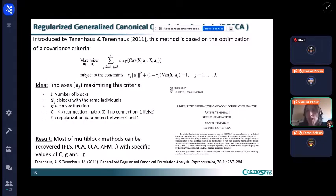This is the moment that I am going to talk to you about regularized generalized canonical correlation analysis, so RGCCA. This method was introduced by Tenenhaus and Tenenhaus in 2011, and this method is based on the optimization of covariance criteria.